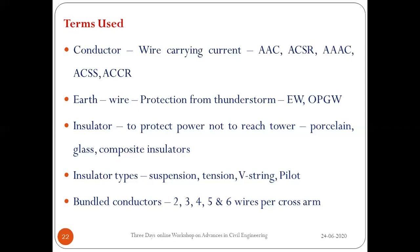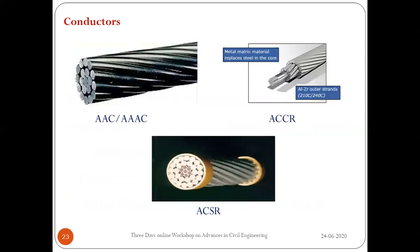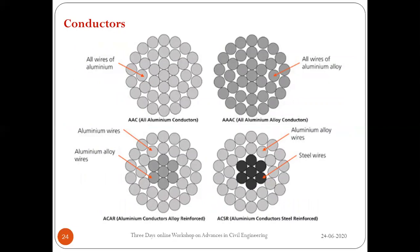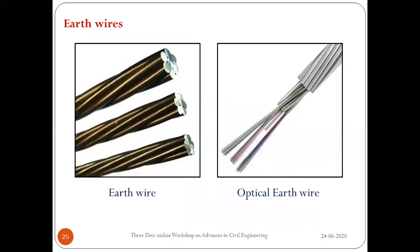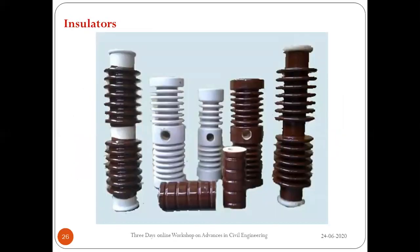Images show different types of conductors used for transmission lines: AAC, AAAC, ACSR, and composite reinforced conductors. Earth wires are shown: the left side is a normal earth wire without optical cables, while the right side is an OPGW (optical ground wire) used for communication in addition to lightning protection. Insulators are typically porcelain, and insulator length increases with the increase in voltage.